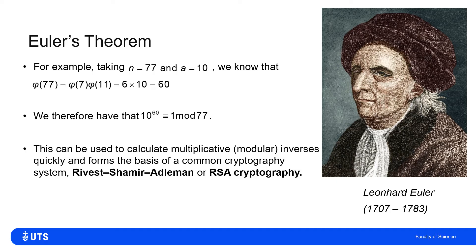If I asked you to work out 10 to the power of 60, you'd write 1 followed by 60 zeros, and dividing 77 into that repeatedly to find the remainder would be far from obvious. But by using Euler's theorem, we can work that out in one line. This idea of calculating multiplicative inverses in a modular arithmetic setting quickly is one of the main ideas behind modern cryptography, and in future sessions we'll see how these ideas work in RSA cryptography.